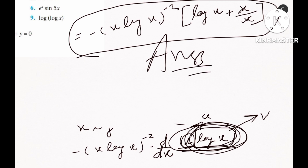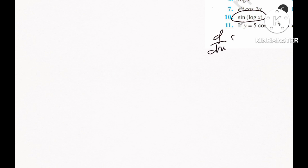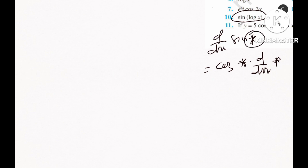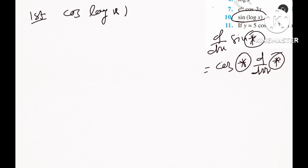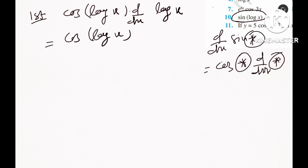Number 10: find the second derivative of sin(log x). The first derivative: derivative of sin(star) is cos(star) times the derivative of star, where star is log x. So the first derivative is cos(log x) times the derivative of log x, which is 1 by x. The first derivative is cos(log x) divided by x.